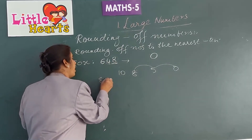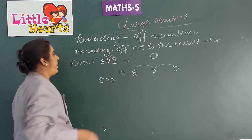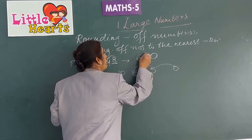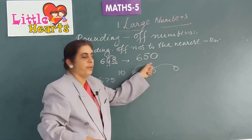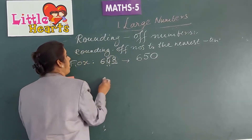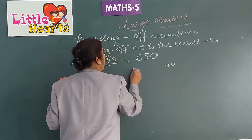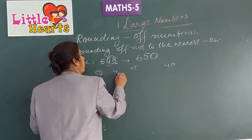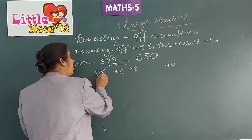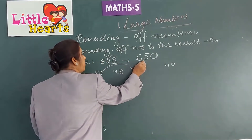For example, take the number 648. The ones place is 8. Since 8 is greater than 5, we round it to the next 10. 48 becomes 50 — just add 1 to the tens place digit. So, 648 is rounded to 650.